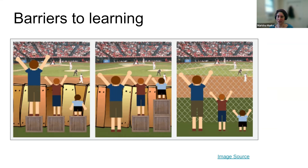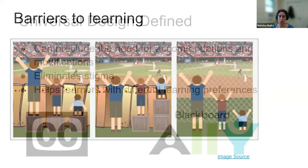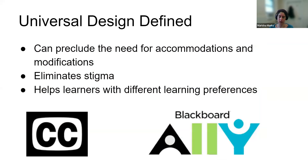This is an analogy — a start to a conversation — because what we really want to think about is how we can make this experience even more authentic and better for the children. Can we get them into the stands so they're actually part of the action? Can we make it an even more inclusive learning opportunity without the need for any retroactive modifications? When we approach courses with universal design for learning thinking, we try to remove the need for accommodations and modifications, eliminate stigma, and help learners with different learning preferences.